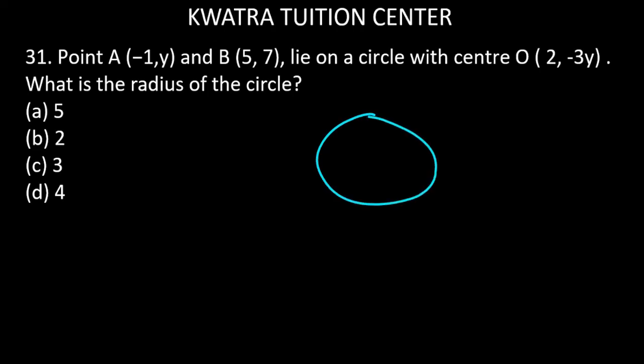So what information is given to you? There are two points that lie on the circle. This is point A which is -1 comma y, and the other point is B which is 5 comma 7, with center O. And what is the center? It is 2 comma -3y.